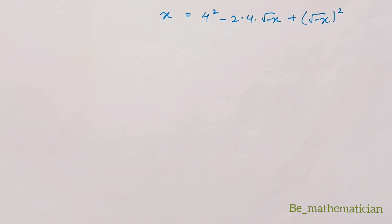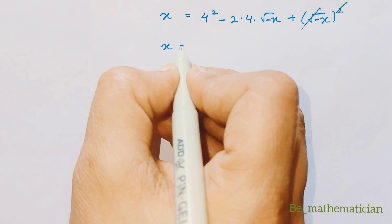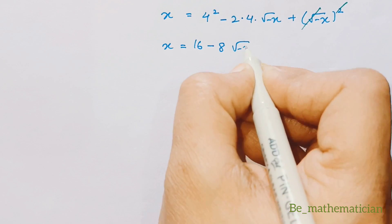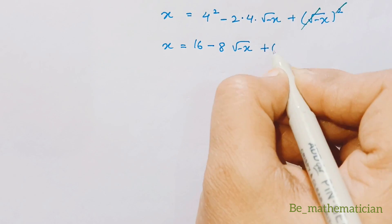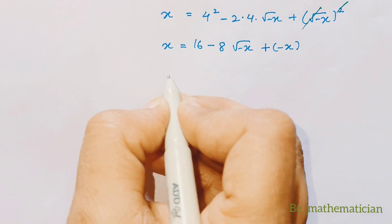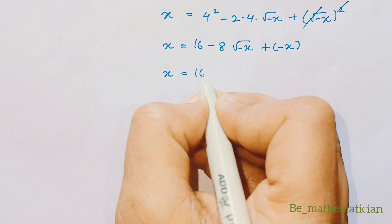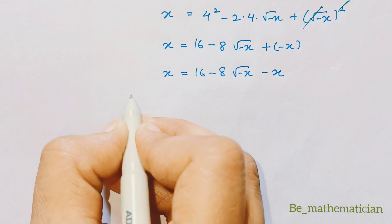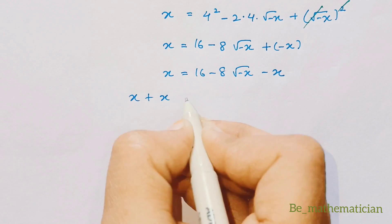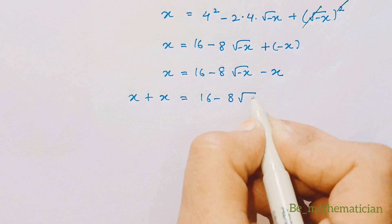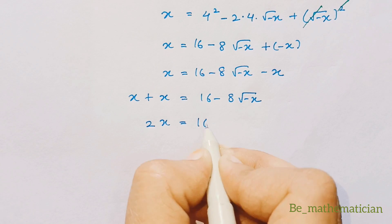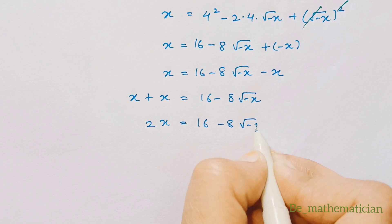The square root gets cancelled on the last term: (√(-x))² = -x. So we get x = 16 - 8√(-x) + (-x), which is x = 16 - 8√(-x) - x. Moving -x to the left hand side gives x + x = 16 - 8√(-x), so 2x = 16 - 8√(-x).